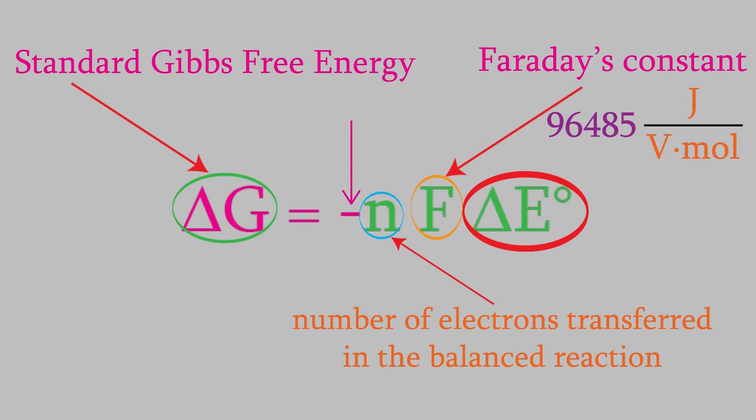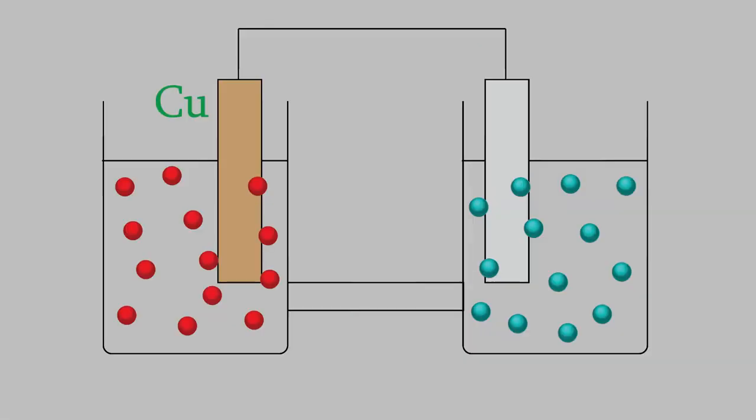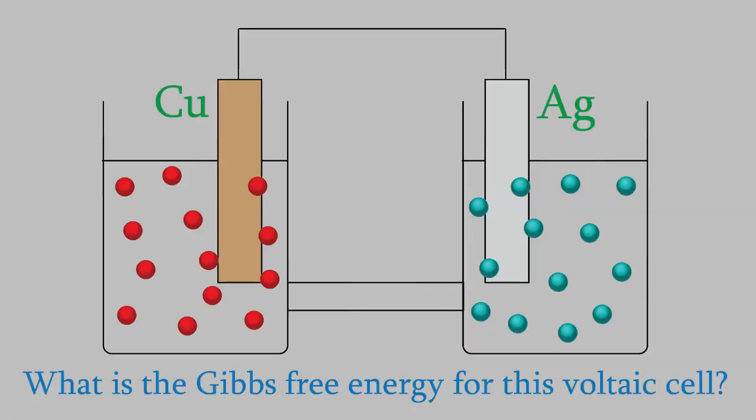Let's try an example. Suppose we want to know the Gibbs free energy of the voltaic cell, where copper and silver are the electrodes. We've studied this voltaic cell before, especially in videos 33 and 34, and when we looked at it, we found out that it produces a voltage of 0.462 volts.